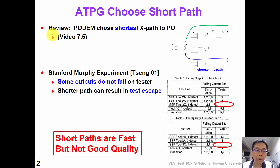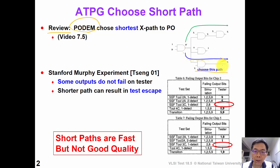Let's do a simple review. In our PODEM algorithm, when we choose a propagation path, the algorithm tends to choose a shorter path rather than the longer path because we want to save runtime. This may be a good idea to make our runtime shorter. However, this may not be a good idea to produce quality and effective test patterns.